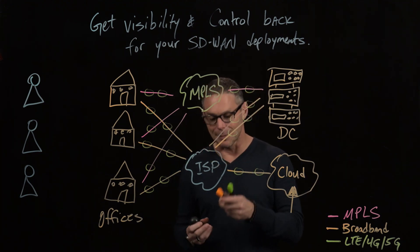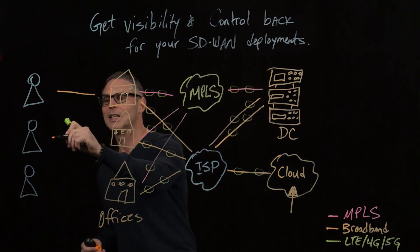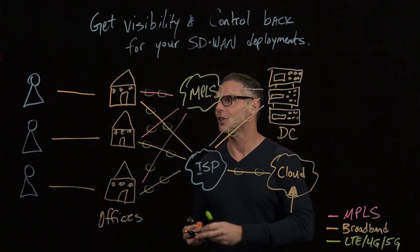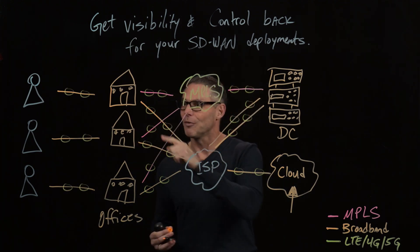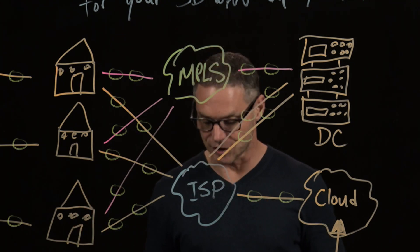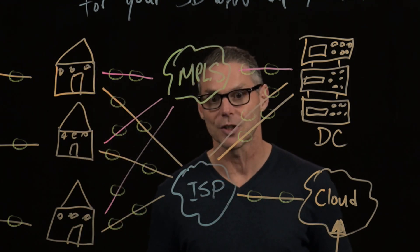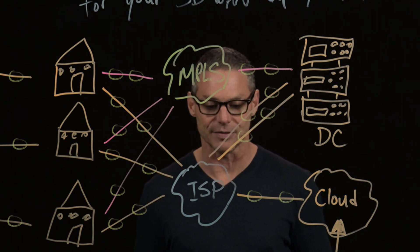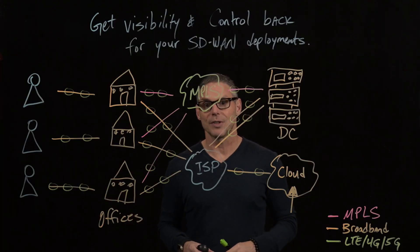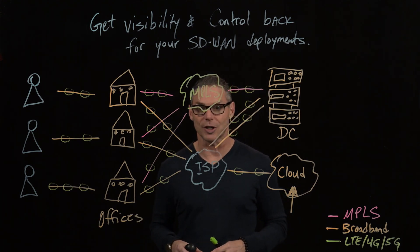And to complicate things even more, we're going to draw some additional network paths that of course are going to have their routing hops. That is new network path technology delivering user experiences from your work-from-anywhere users, complicating things even more. So how do we gain back control and visibility of what is now a very complex and challenging network architecture?